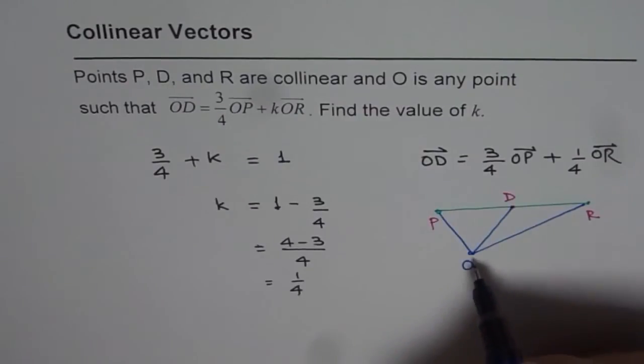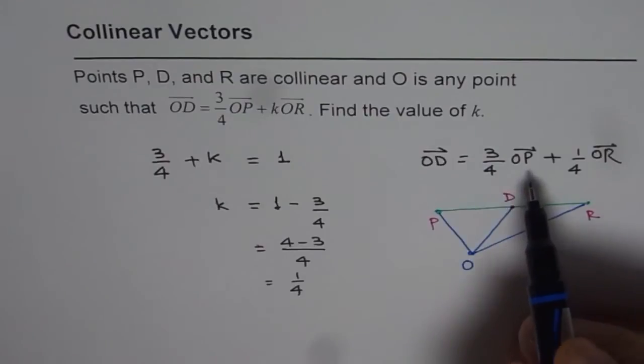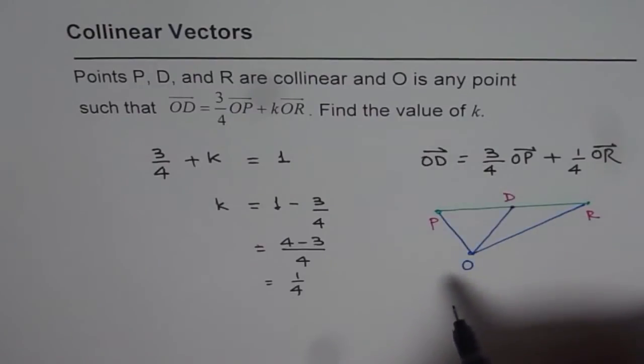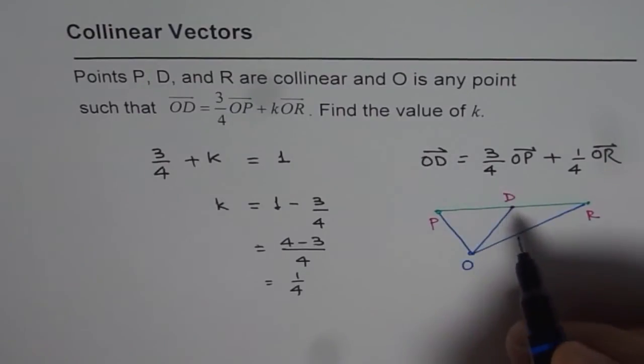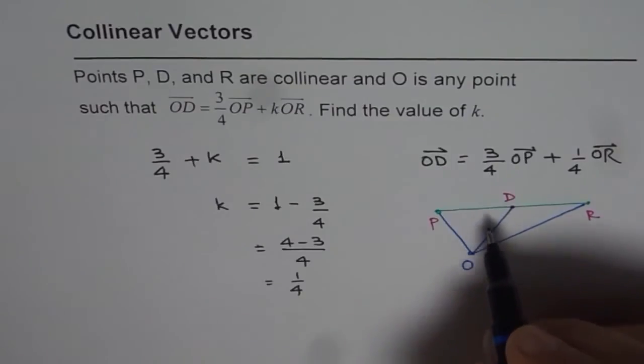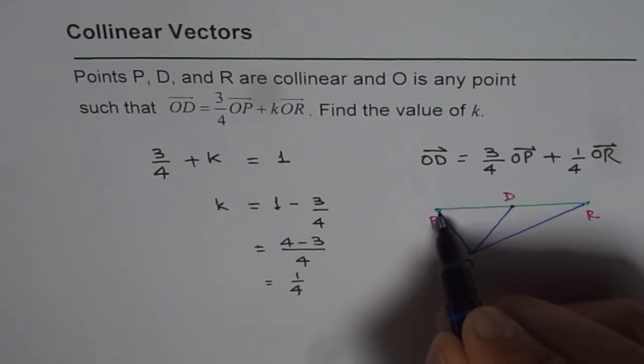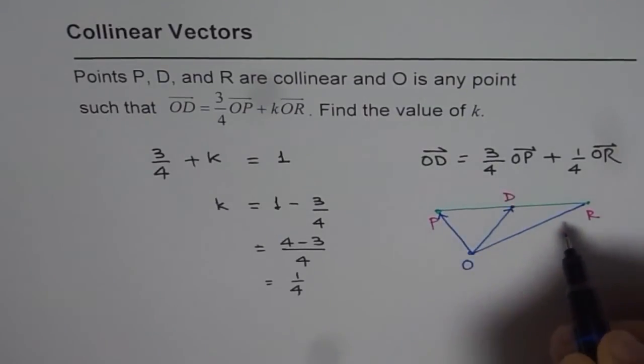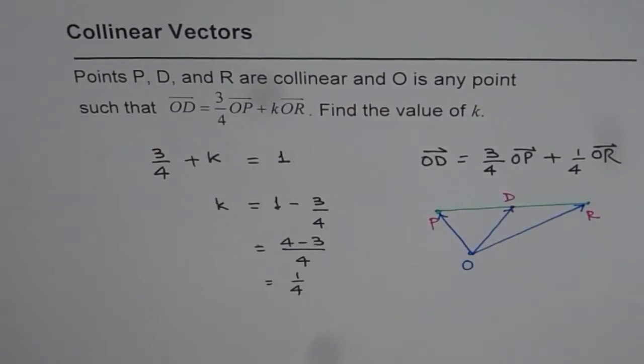Now in this case, OD equals what we have derived or found here from the value of k: OD equals 3/4 of OP plus 1/4 of OR. That is what we have found here.